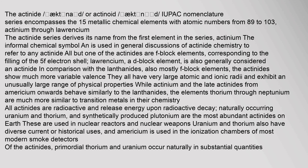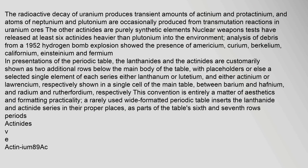Of the actinides, primordial thorium and uranium occur naturally in substantial quantities. The radioactive decay of uranium produces transient amounts of actinium and protactinium, and atoms of neptunium and plutonium are occasionally produced from transmutation reactions in uranium ores. The other actinides are purely synthetic elements. Nuclear weapons tests have released at least six actinides heavier than plutonium into the environment.